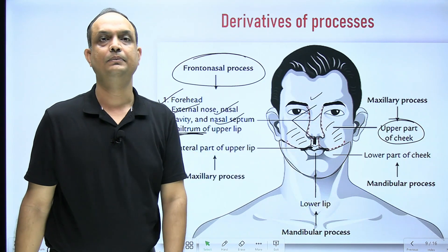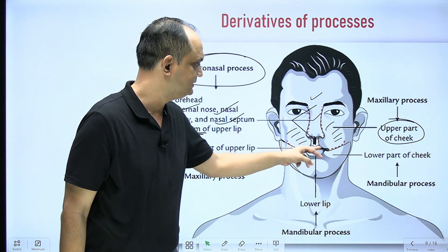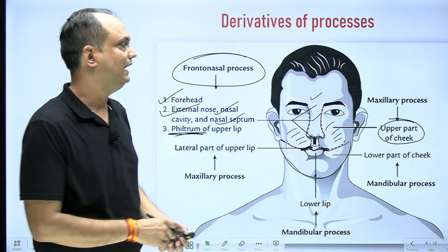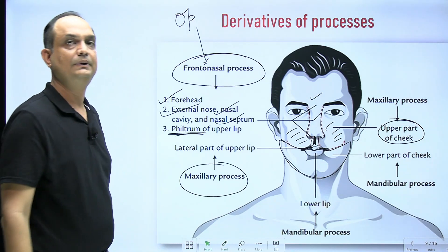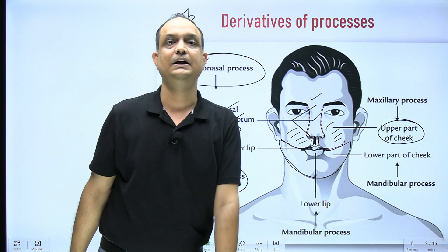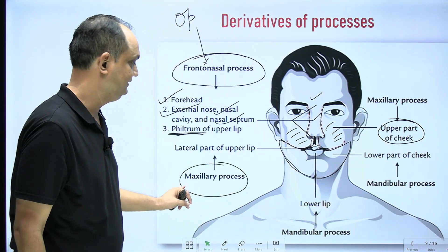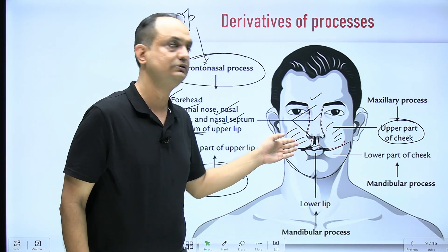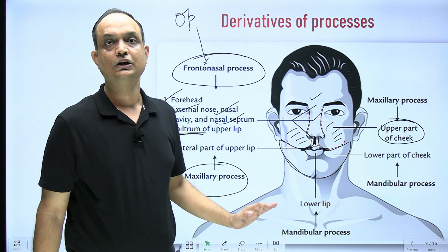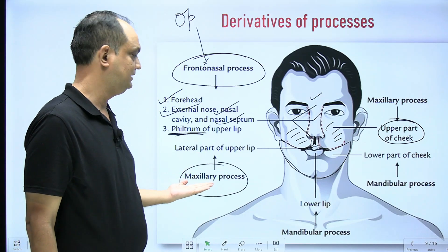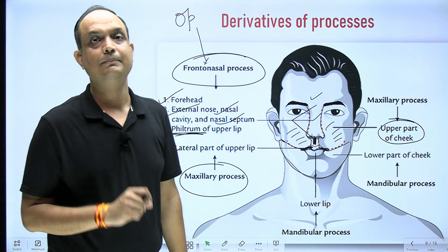The middle portion of the upper lip develops from the frontonasal process, but the sensory supply of the entire upper lip comes from the maxillary nerve. The frontonasal process derivative is supplied by the ophthalmic division, the maxillary process derivative by the maxillary division, and the mandibular process by the mandibular division of the trigeminal nerve. But the skin of the whole upper lip is supplied by the maxillary division because the ectodermal covering of the upper lip comes entirely from the maxillary process.